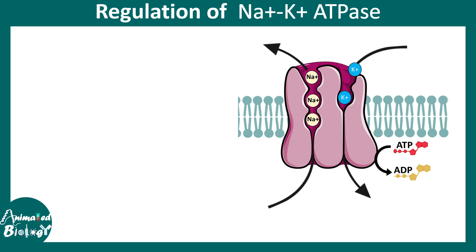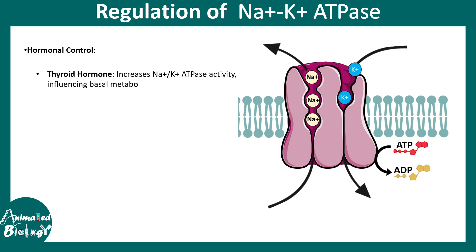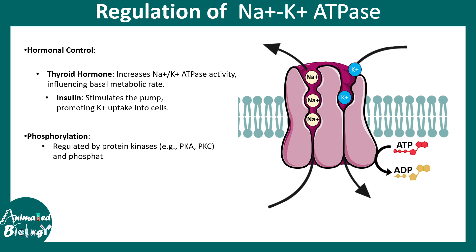Sodium potassium ATPase can also be regulated under hormonal control. For example, thyroid hormone increases its activity, and insulin stimulates the pump, promoting potassium uptake into the cell. Additionally, phosphorylation by proteins such as protein kinase A, protein kinase C, and phosphatases can bidirectionally alter the overall ATPase activity.